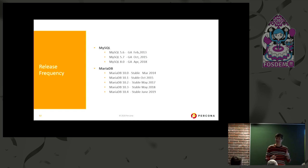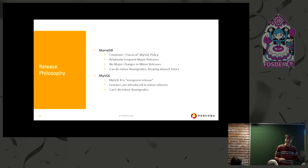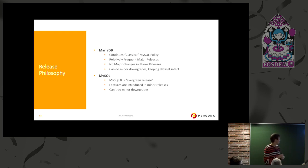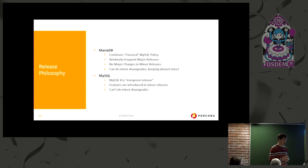Release frequency is different — MariaDB is much faster. MariaDB continues to follow a classical MySQL policy of introducing features only in major releases, with relatively frequent major releases — about once a year recently — and no feature changes in minor releases. MySQL 8 is an evergreen release — MySQL 8 forever, at least for the next few years — where many cool features are introduced in minor releases, like hash join added in the latest release. But that also means there is potential breakage with minor releases, and you can't do downgrades between minor releases, which freaks out a lot of MySQL old-timers.